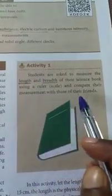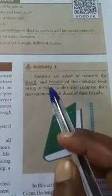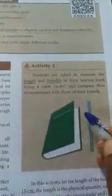These three are very important to take perfect measurement. You read this carefully. Then activity one. Students are asked to measure the length and breadth of their science book using a ruler and compare their measurement with those of their friends.